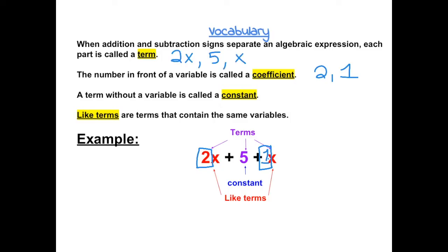A term without a variable is called a constant. So our constant would be 5 in this expression because it does not have any variable. Like terms are terms that contain the same variables. So 2x and x would be the only like terms in the expression because they both have the same variable x.